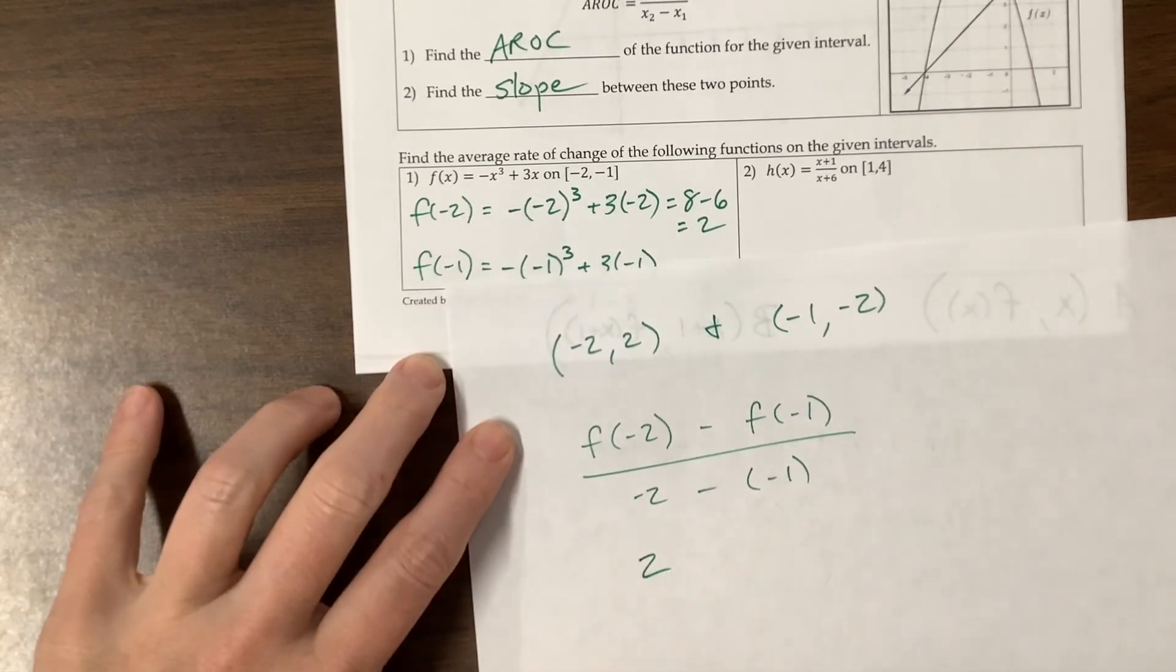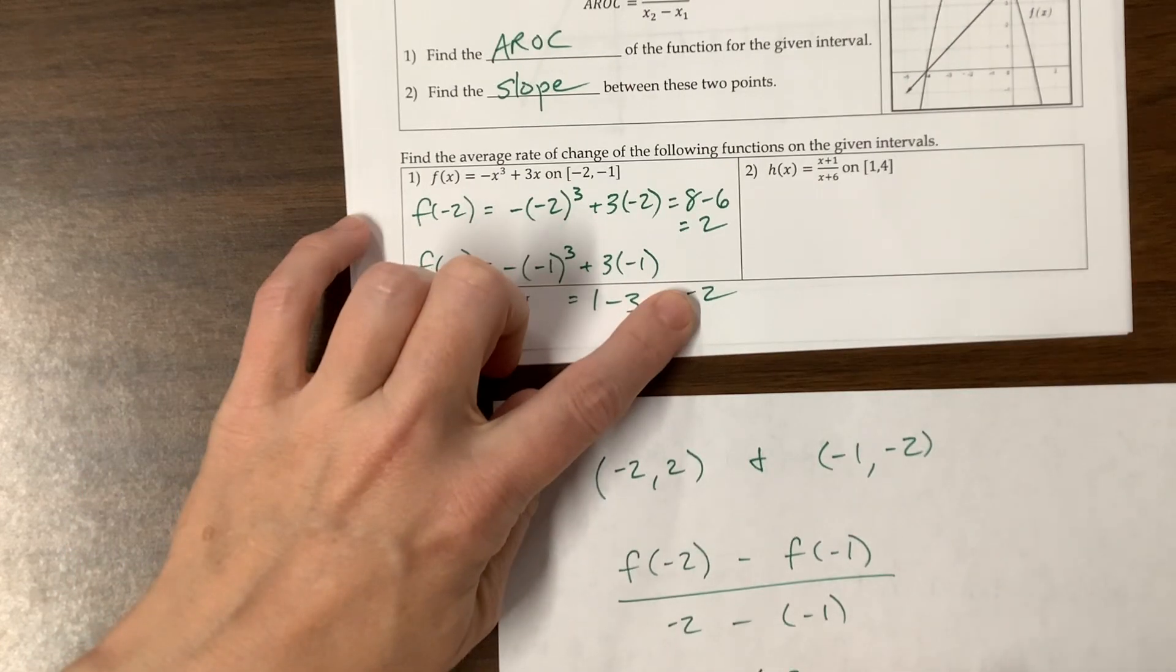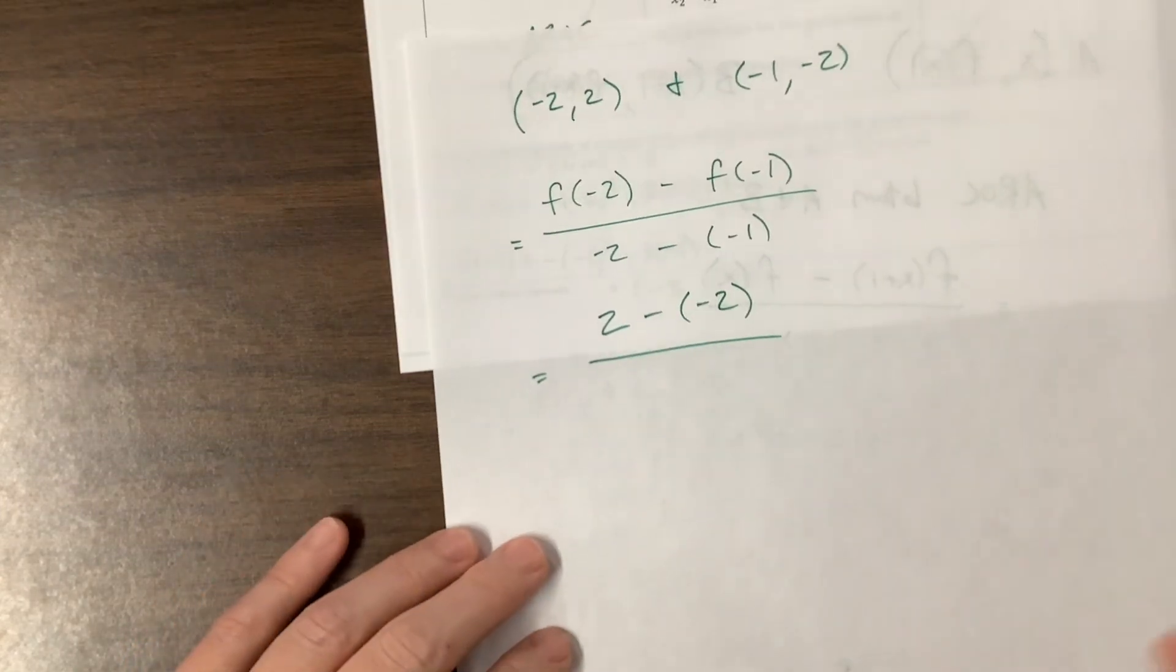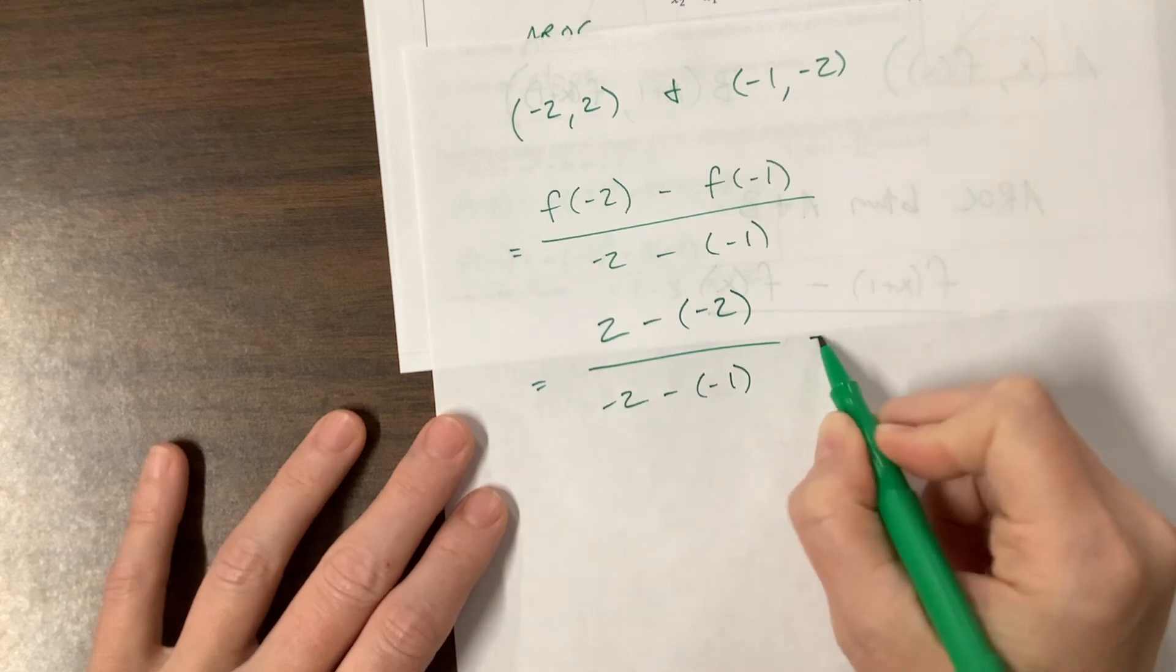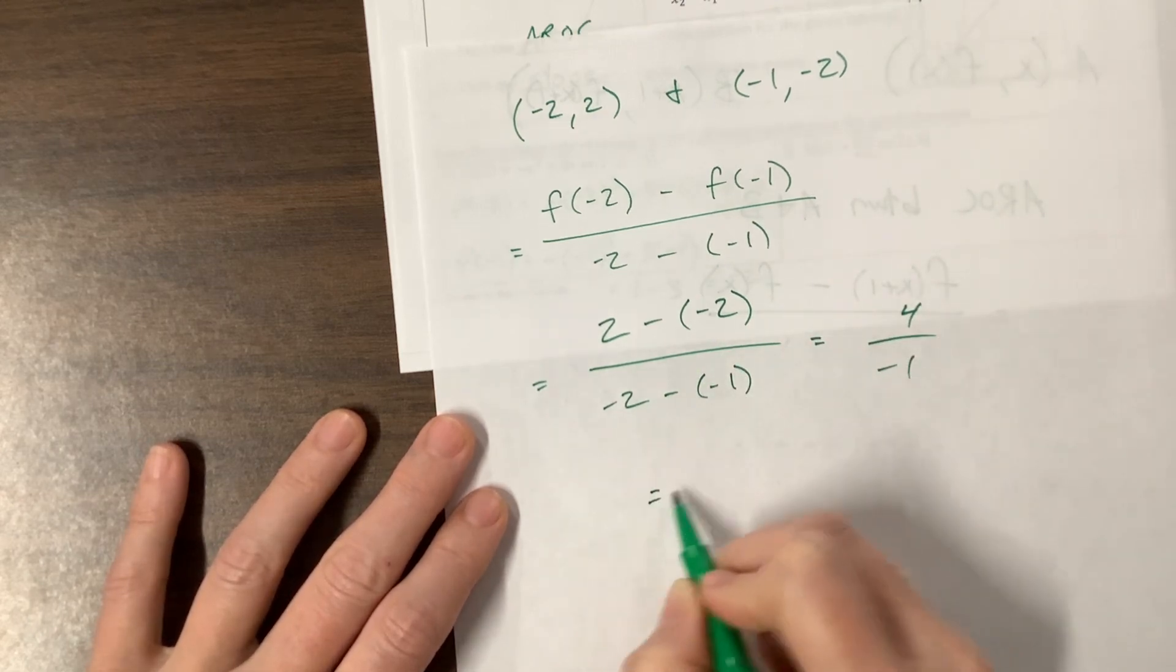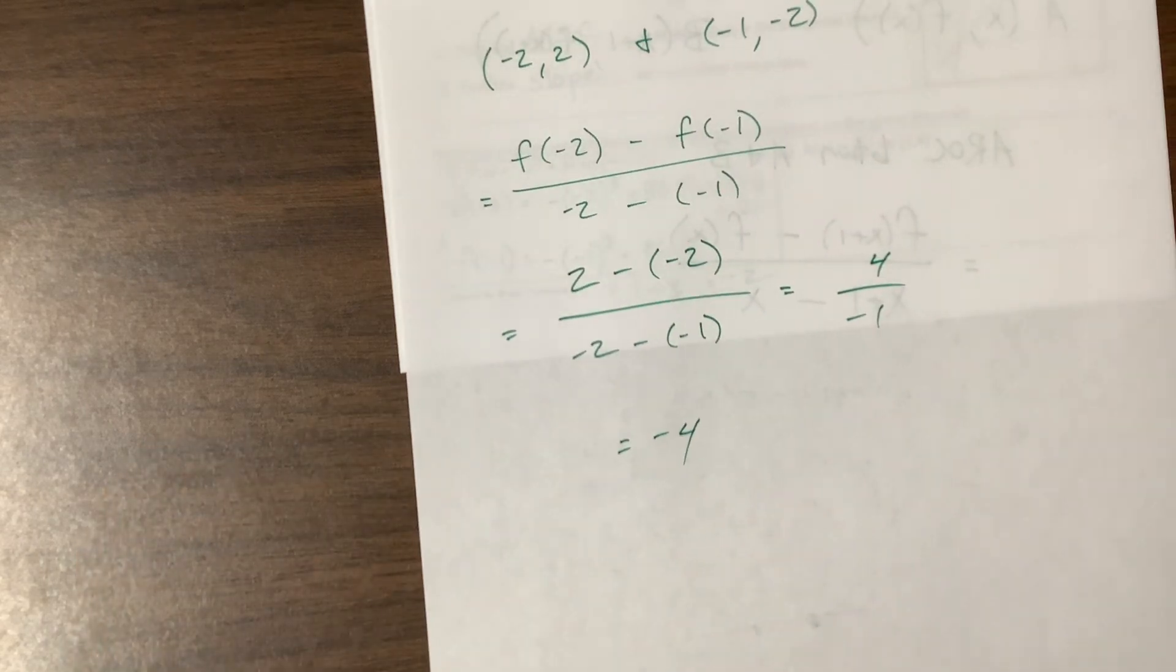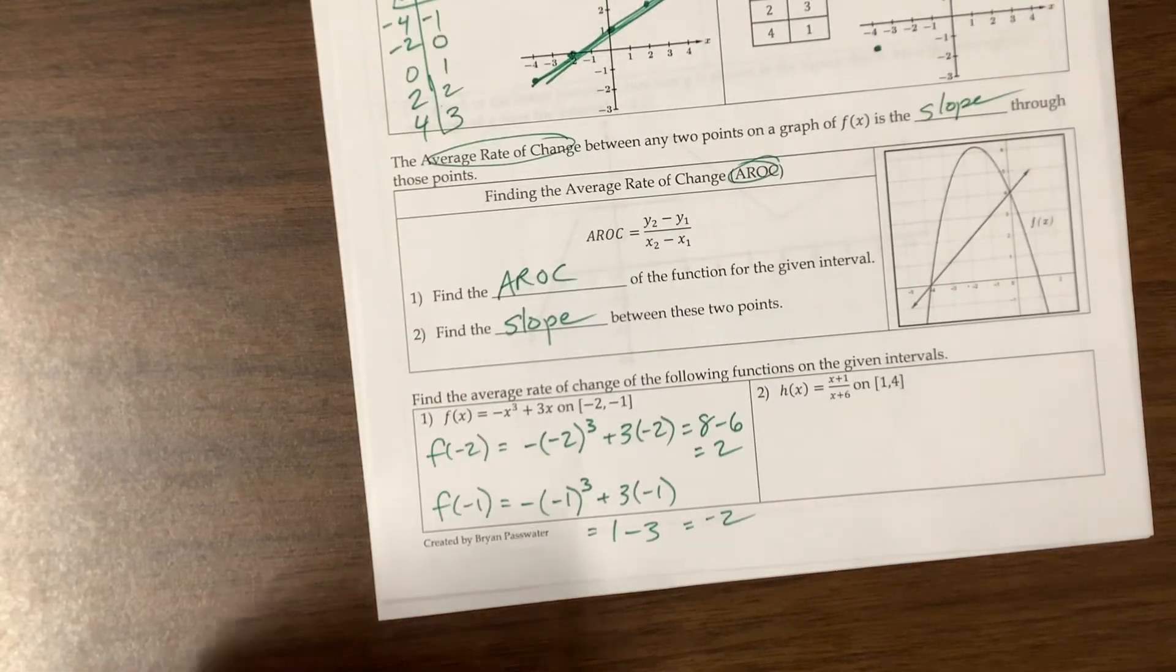f of negative 1, we just said, was negative 2. So minus a negative 2 all over. This is equal. Oh, I'm sorry. You couldn't see my work. All over negative 2 minus a negative 1. I see a positive 4 over, that's a negative 1. So this would be equal to negative 4, unless I'm crazy. It's the end of the first day, and y'all, I'm exhausted. And that's how we would do that first problem.